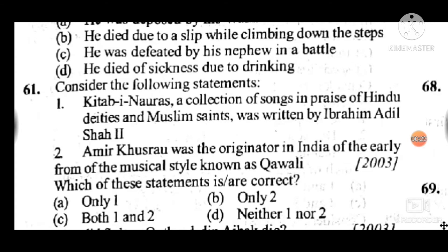Question 61: Consider the following statements and select the correct ones. Answer to question 61 is C: both first and second statements are correct. Kitab-i-Nauras, a collection of songs in praise of Hindu deities and Muslim saints, was written by Ibrahim Adil Shah. Second statement: Amir Khusrau was the originator in India of the early form of the musical style known as Qawwali — this statement is also correct.